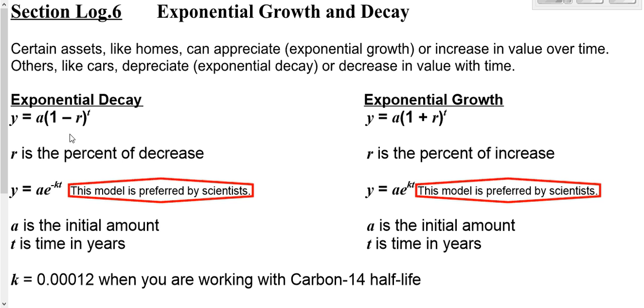R here is your interest rate, or not necessarily interest rate, but your percentage of change as a decimal. So if you had a percentage of change of 10%, you'd want to rewrite it as 0.1. And then t is your time.